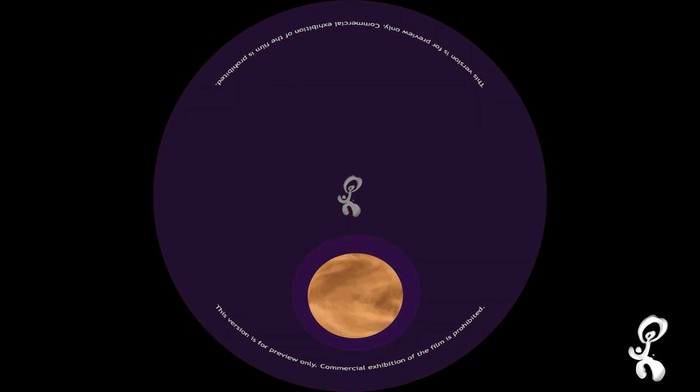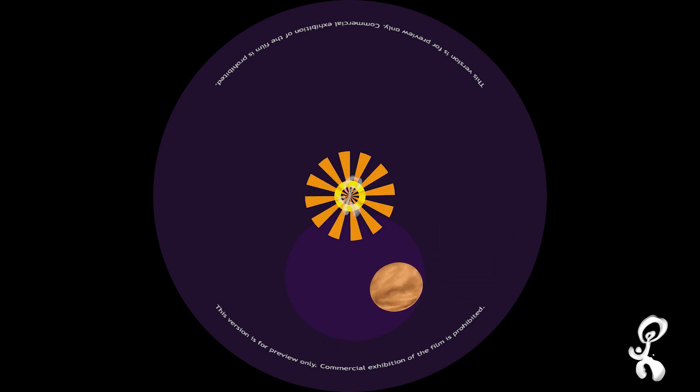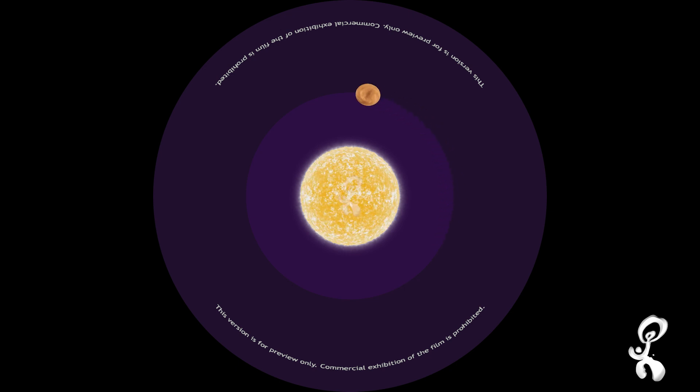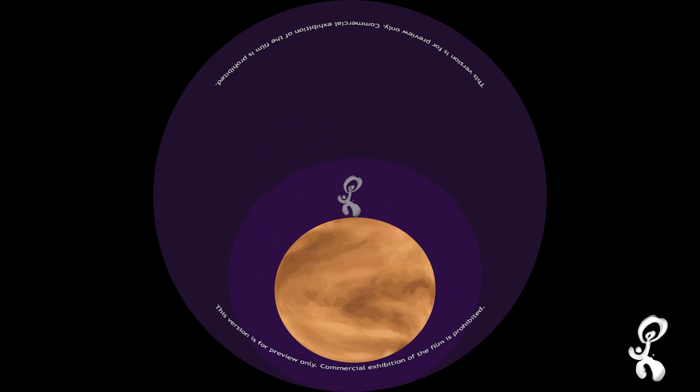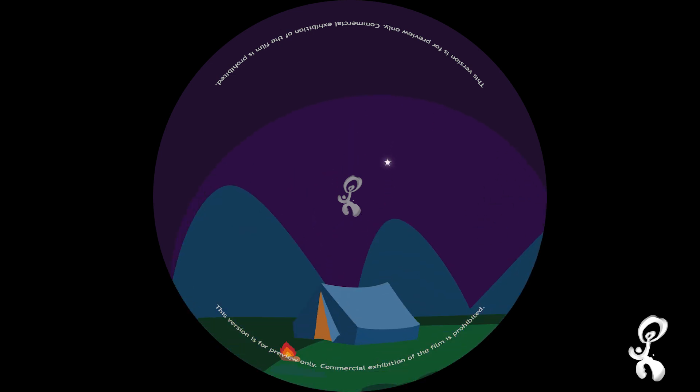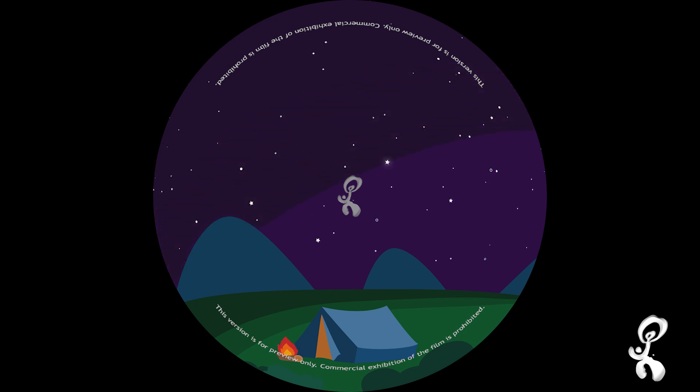The hottest planet in our solar system is Venus. The size of Venus is almost the same as Earth. Venus spins very slowly in the opposite direction. It is covered with dense clouds that keep the planet always warm. Venus is easily spotted as the brightest star in our night sky.